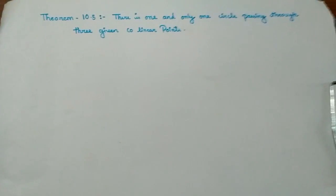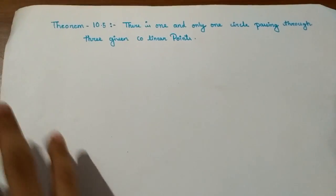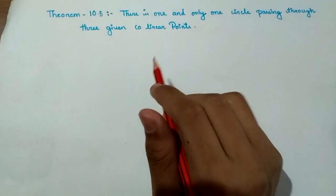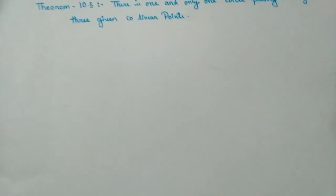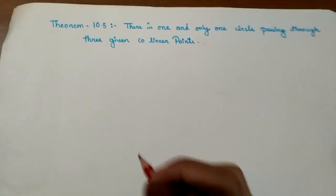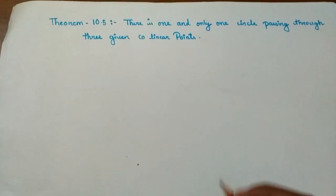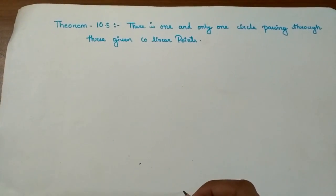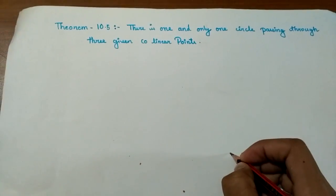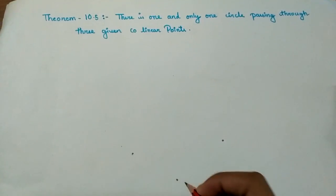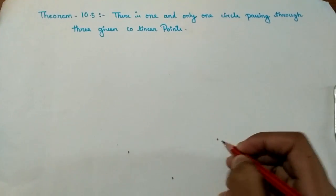In this video, I will show you how to prove this theorem. We need to prove that only one circle can pass through three given non-collinear points. This proof involves construction. Non-collinear points means the three points are not on the same line. So I will take any three non-collinear points and join them.